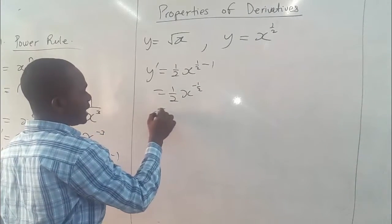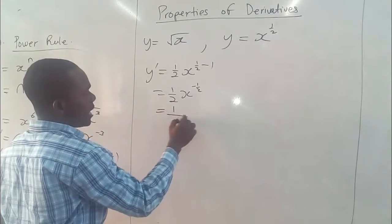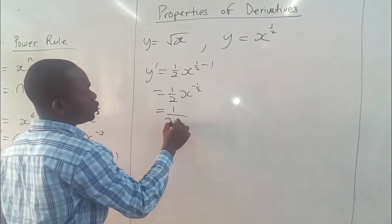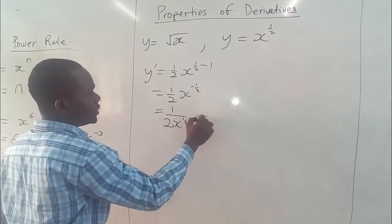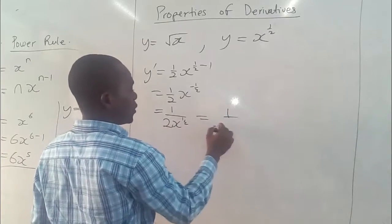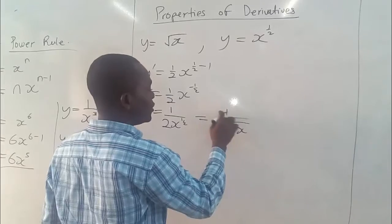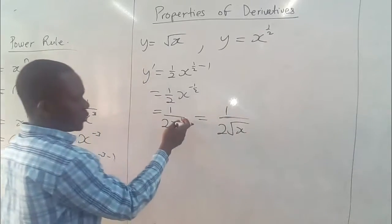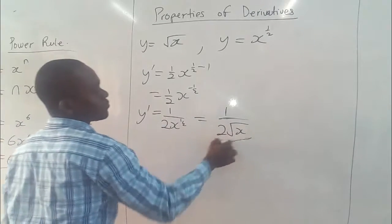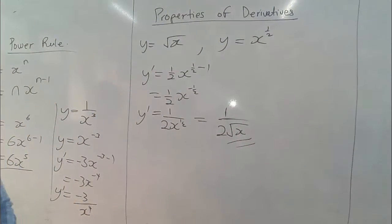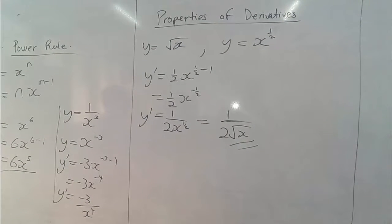So we rewrite this as 1 over 2x to the power half, which is also giving us 1 over 2 square root of x. If we want to rewrite it in the original form, x to the power half is square root of x, so this becomes our final derivative, as simple as that. That's what the power rule is all about.